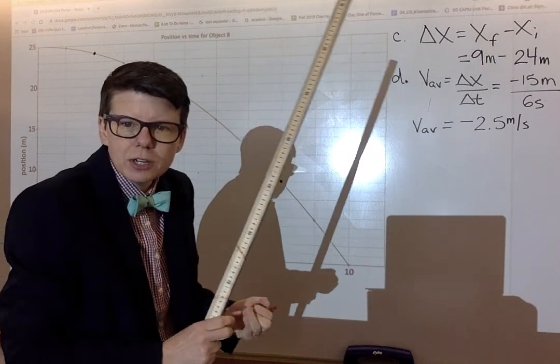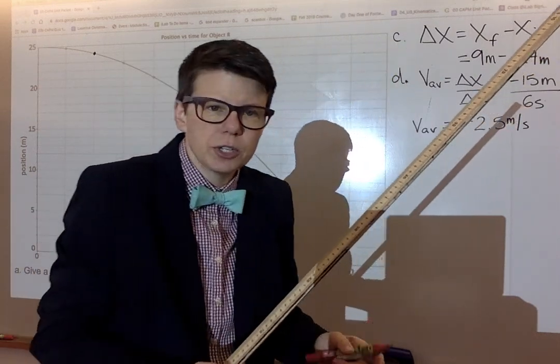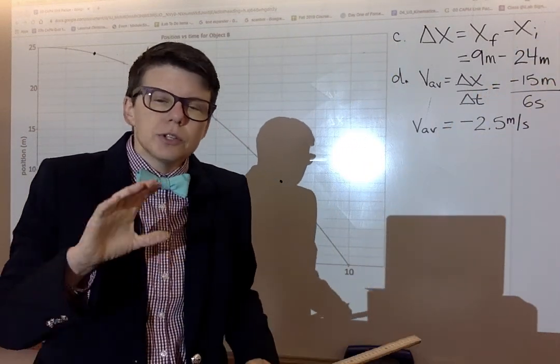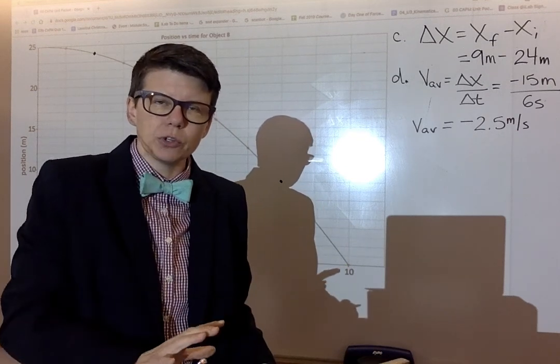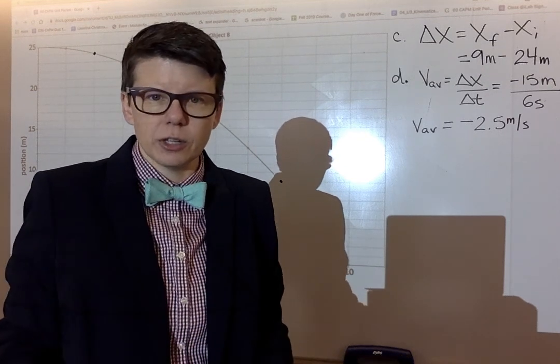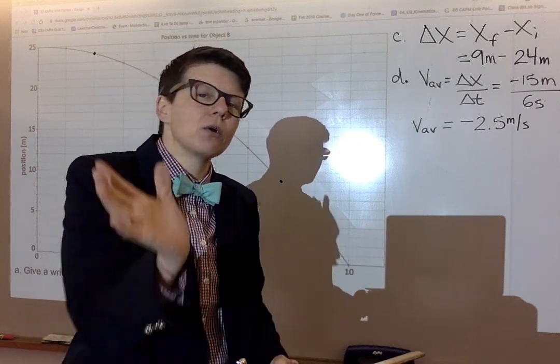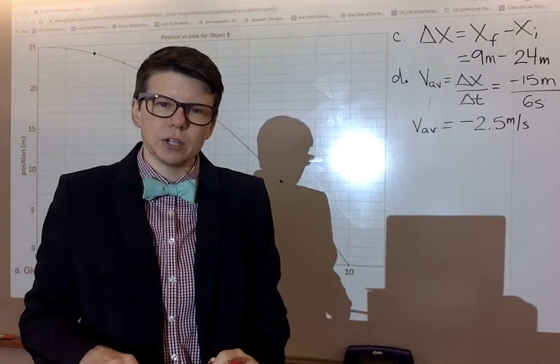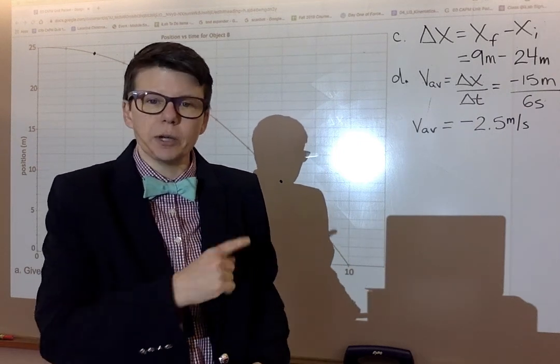Find the instantaneous velocity. Now there's a hint in the question. It says by using the slopes of tangent lines. This is where you need to call back on something you learned earlier. What is a tangent line? Pause the video right now, go back and look in your packet, figure out what a tangent line is, then I'll restart my explanation.